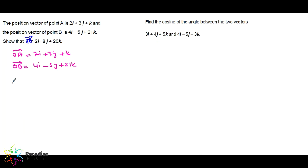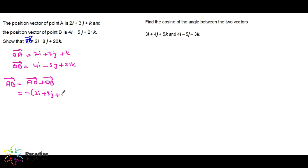To find AB using these two vectors: AB = AO + OB. The rule is last letter, first letter must be the same. I know OA, not AO — but AO and OA are opposite vectors. So AO = −(2i + 3j + k), then plus OB which is 4i − 5j + 21k.